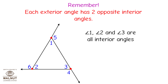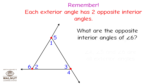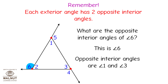Angle 1, angle 2, and angle 3 are all interior angles. Angle 4, angle 5, and angle 6 are all exterior angles. What are the opposite interior angles of angle 6? This is angle 6 — the opposite interior angles are angle 1 and angle 3.